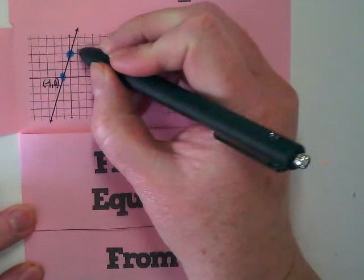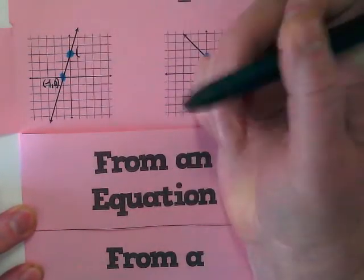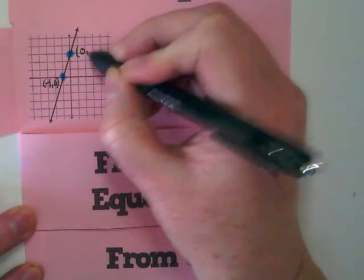What is my coordinate pair, my x-y, for this y-intercept? 0, 3. 0, 3.